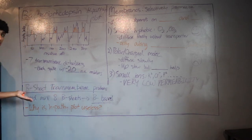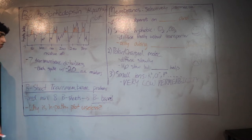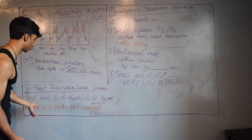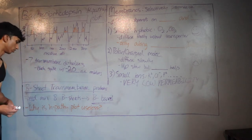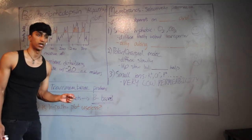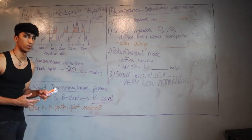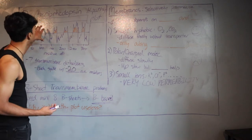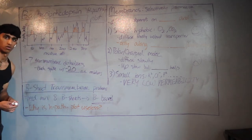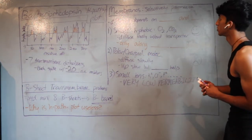Can beta sheets also span the membrane? Yes, but you need a minimum of eight beta sheets to form a beta barrel that can cross the membrane. One beta sheet alone is too short. Importantly, a hydropathy plot is useless for beta barrel proteins because every other residue alternates between hydrophobic and hydrophilic — there's no consecutive stretch of hydrophobic amino acids for the plot to detect.